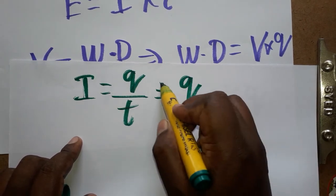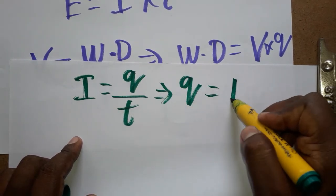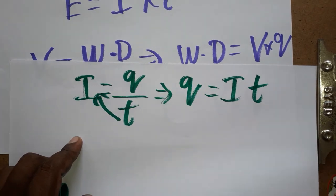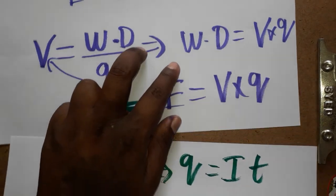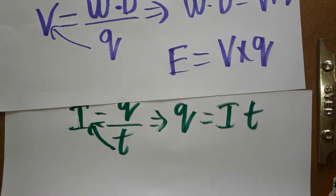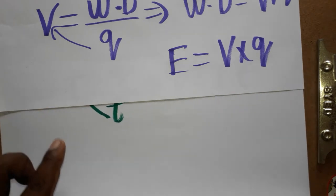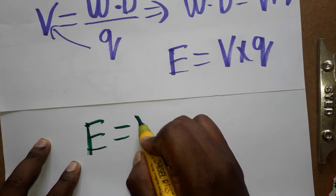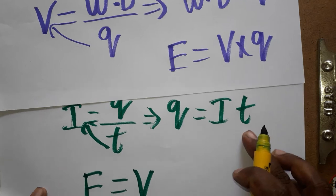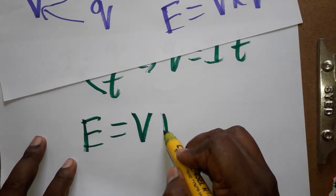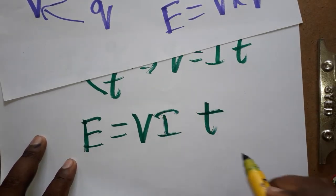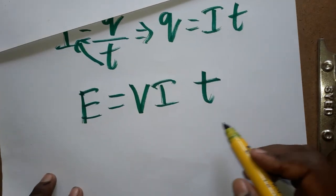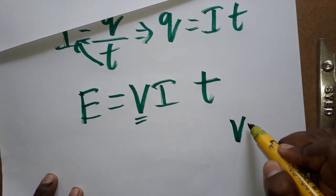Charge is equal to current into time, by cross multiplication. Substituting in the energy equation, energy is equal to V times I times T — that is V I T.